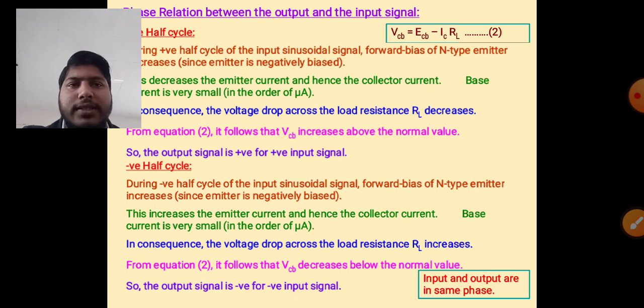Input and output are in the same phase. Therefore, we find the conclusion that input and output signals are in the same phase. This is the phase relationship between output and input signal. Thank you to all of you for watching this video.